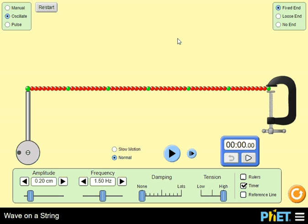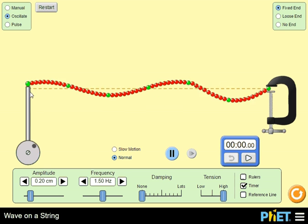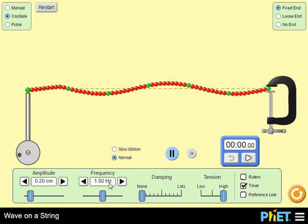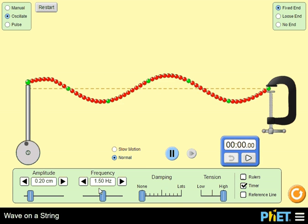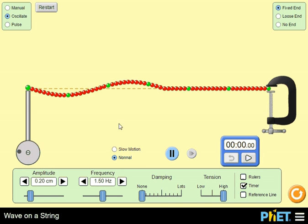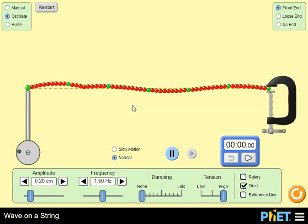This is a video demonstration of standing waves using PhET simulation wave on a string. The simulation is on oscillate mode with a fixed end. I've enabled the timer to do a quick measurement at the beginning of this simulation. Right now, you see that you are not getting a standing wave.